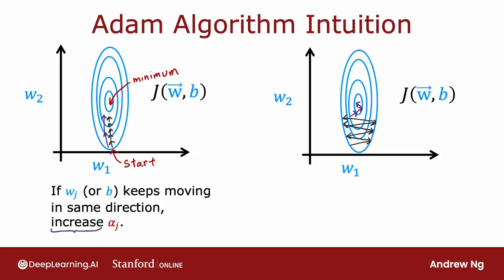let's increase the learning rate for that parameter. Let's go faster in that direction. Conversely, if a parameter keeps oscillating back and forth, this is what you saw in the second example on the previous slide, then let's not have it keep on oscillating or bouncing back and forth. Let's reduce alpha j for that parameter a little bit.